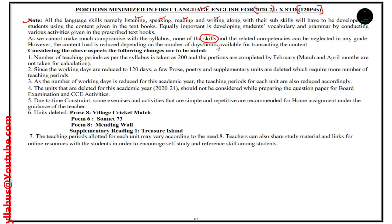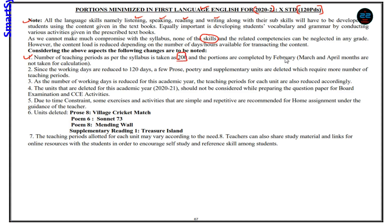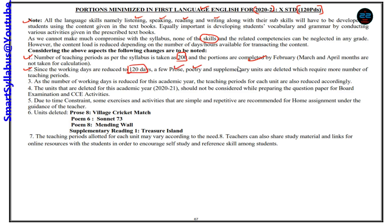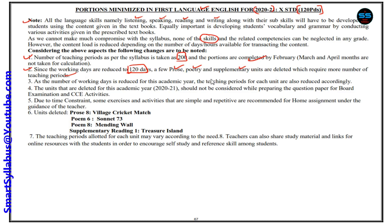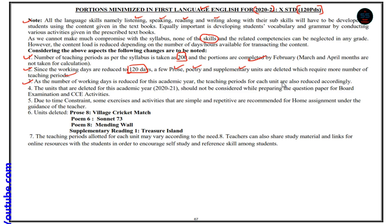The content load is reduced depending on the number of available days. Considering the above aspects, the following changes are to be noted. The number of teaching periods as per the syllabus is usually 200, with the portion completed by February — that's the usual routine. But now, since working days are reduced to 120, a few prose, poetry, and supplementary units are deleted — those which usually require more teaching periods. The teaching periods of each unit are also reduced for this academic year 2020-21.